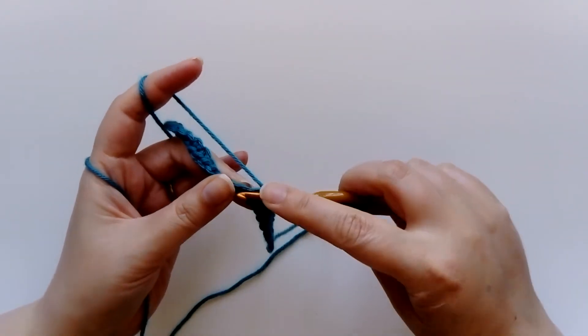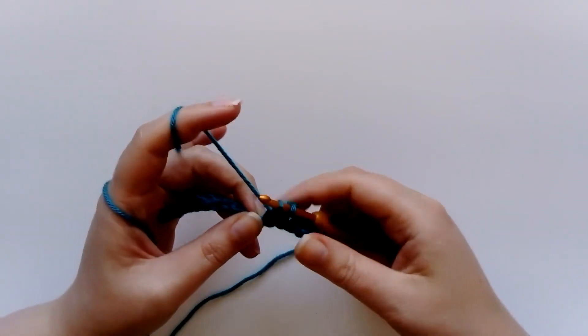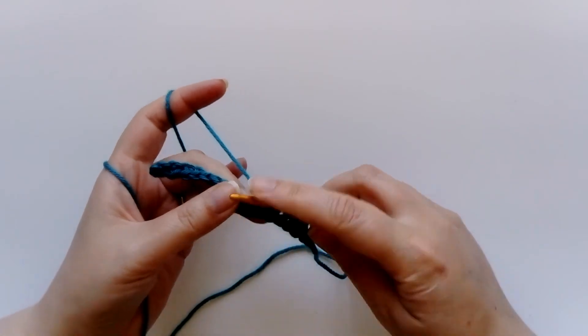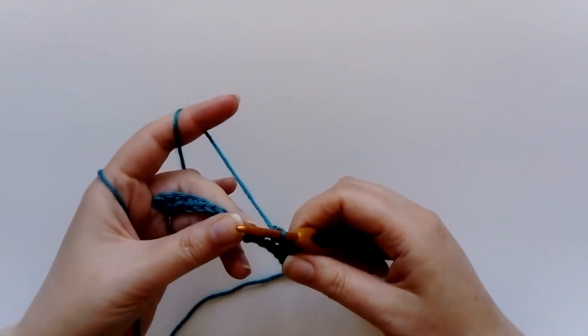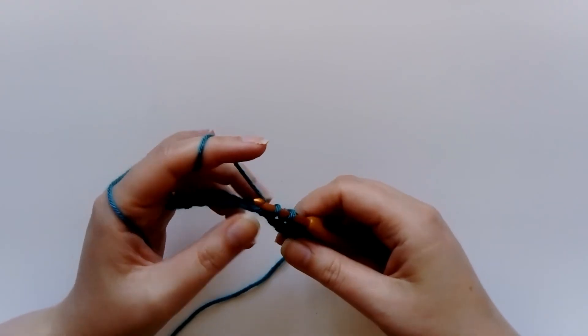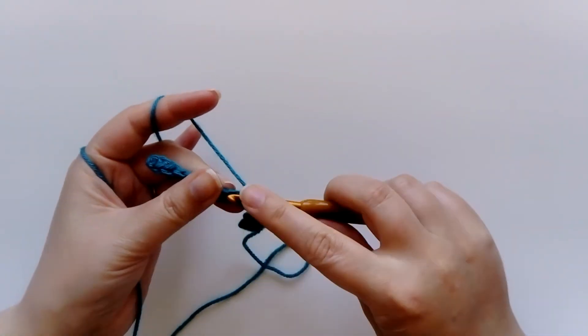And that's all there is to a double crochet stitch. Really commonly used stitch. Makes a nice dense weave fabric. Great for stuffed toys because you can't see the stuffing through it, and brilliant for a lot of other things as well.